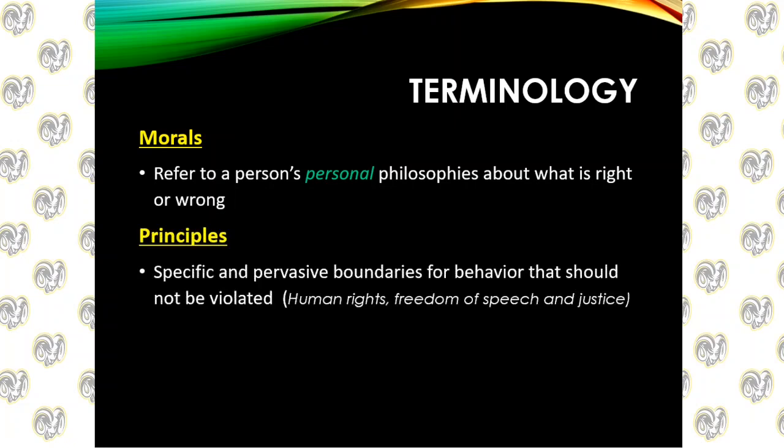Principles are specific and pervasive boundaries for behavior that should not be violated — that red line you're not going to cross. In the United States, we have certain principles we try to uphold: freedom of speech, freedom of religion, and basic human rights. These are things citizens say should not be taken away — that line should not be crossed.